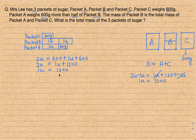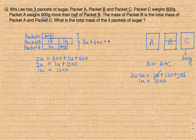Now we know how much one unit is. Let's find the total mass of three packets of sugar in terms of units. Looking at the model carefully, there are three units total, plus this 600 and plus another 600. So there are two 600s. That's the total mass and that's what we need to find.